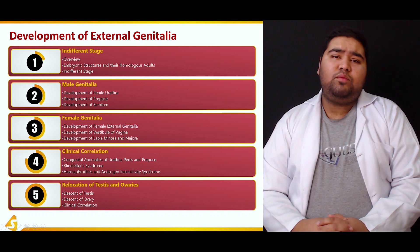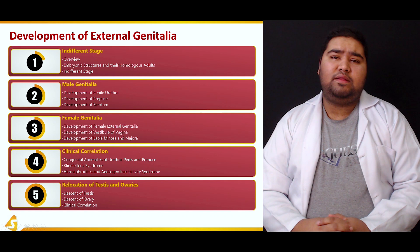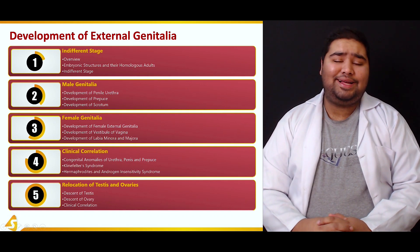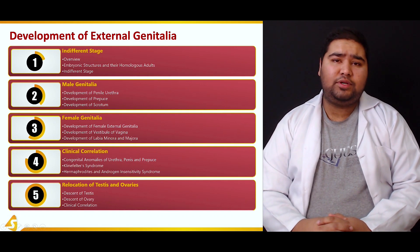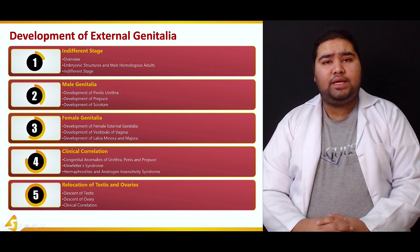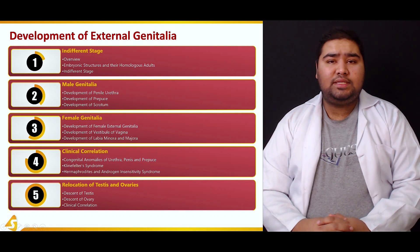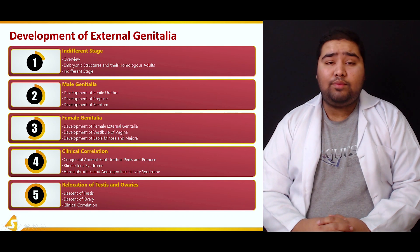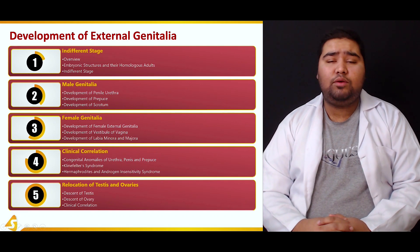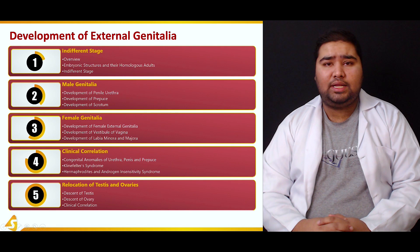Finally, in the fifth section, we'll see how the testes and ovaries — the adult reproductive organs — are carried to their respective adult locations in the body. We'll see where they are formed initially and what locations are ultimately assigned to them in the adult body.